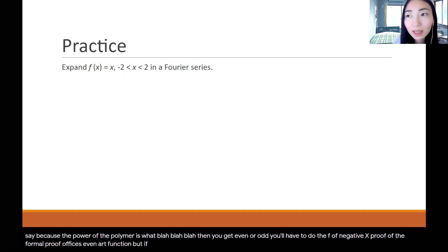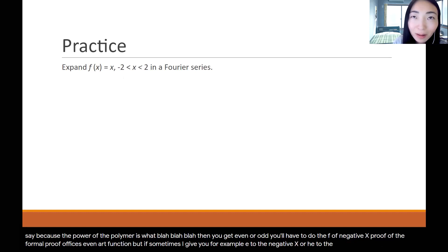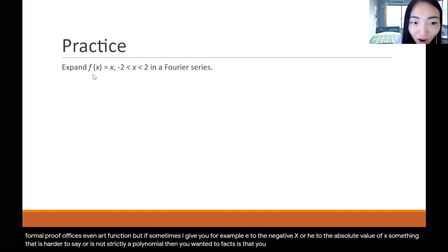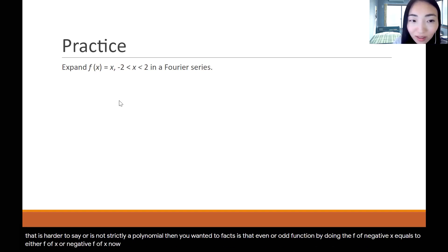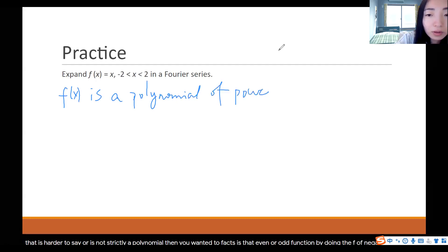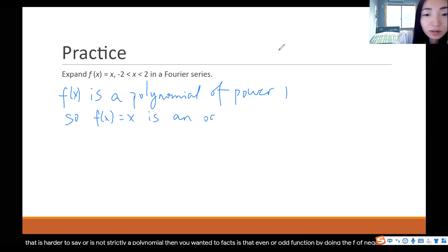But if sometimes I give you something like e to the absolute value of x — something that is harder to classify, or it's not strictly a polynomial — then you want to first prove to me whether f of x is an even or odd function by doing the f of negative x equals to either f of x or negative f of x analysis. So in this case, f of x is a polynomial of power 1, so f of x equals x is an odd function.